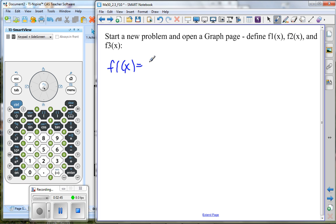For f1 of x, we're going to use the absolute value of x. For f2 of x, we're going to use the opposite of the absolute value of x. And for f3 of x, we're going to use x times sine x.